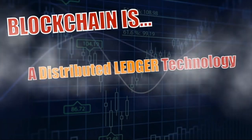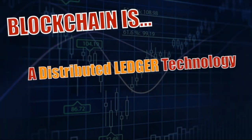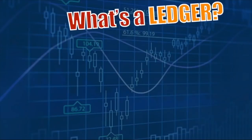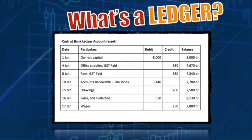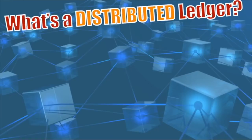Blockchain, just to make it basic for those of you who don't know, is a distributed ledger technology — ledger being the key word. What's a ledger? A ledger is essentially a spreadsheet used in accounting where you have debits, credits, and balances. That's essentially all it is — just a spreadsheet. Very simple.